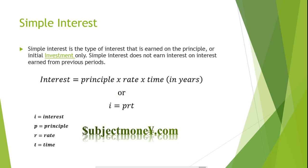I stands for interest, which is the amount of interest paid or earned. P stands for principal, which is the amount originally invested or the original amount borrowed. R stands for rate, which is the annual interest rate paid on a loan or earned on an investment.